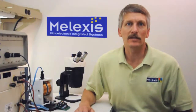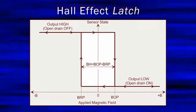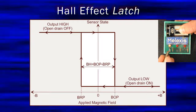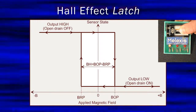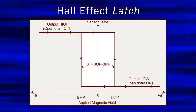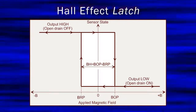Another possibility is if the BOP point is positive and the BRP point is negative. This results in what is commonly called a Hall Effect latch. The device will turn on in response to a sufficiently large positive field, but will only turn off if a sufficiently large negative field is applied. If you simply remove the field, the device will remain in whatever state it was in, hence the name latch. One consequence of latching behavior is that to use it in an application, you must provide both north and south magnetic field polarities — the south pole to switch the device on, and the north pole to switch the device off.